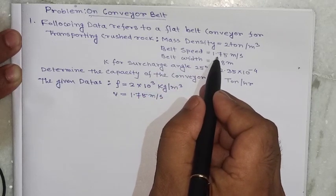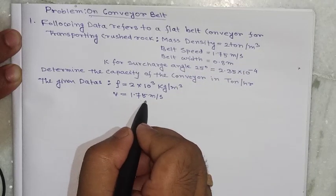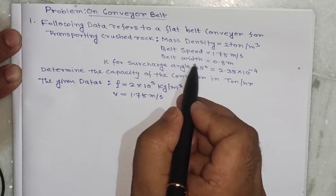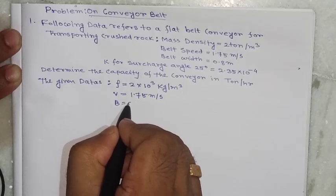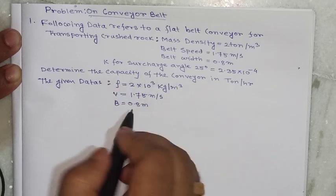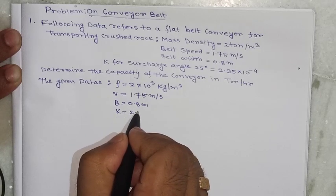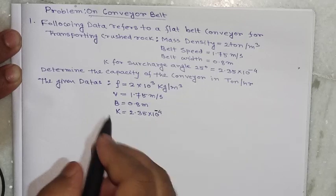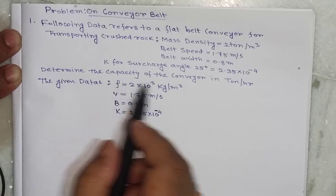Belt width — the total belt width is given as B equals 0.8 meter. The value of k, that is the flowability factor, is 2.35 into 10 to the power minus 4.